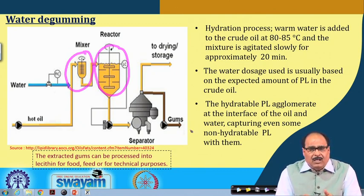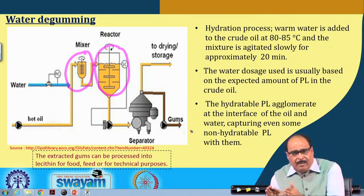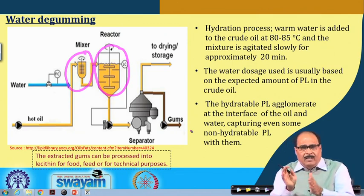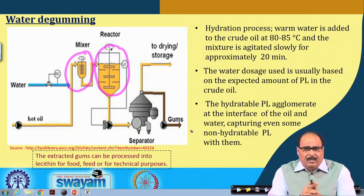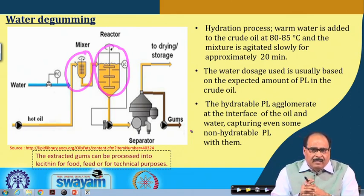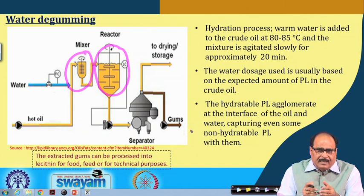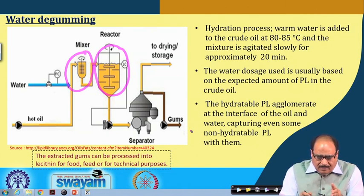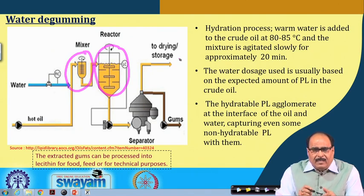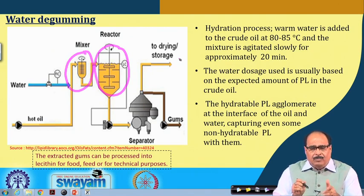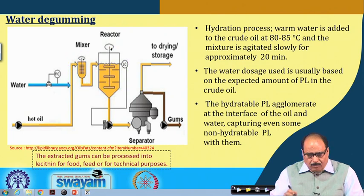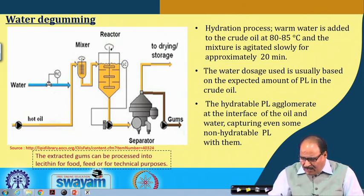The gums removed are sent for lecithin production or for purification and preparation of other gum products. The degummed oil is sent to a dryer because the water added during hydration must be removed before sending it to the next processing step.